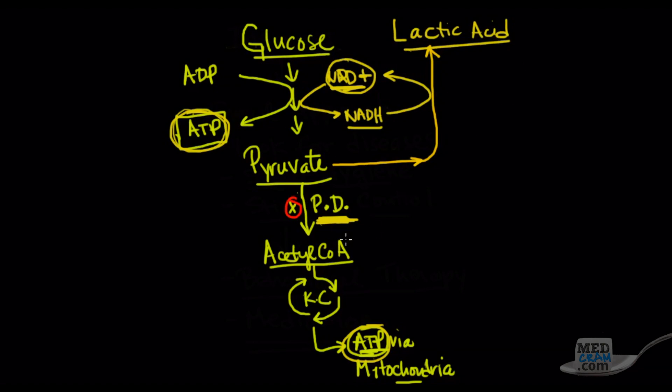And so therefore, when you see a problem with pyruvate dehydrogenase, you see a shuttling of pyruvate. Instead of going to acetyl-CoA, you see it going to lactic acid. So that's key to understand.